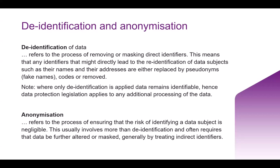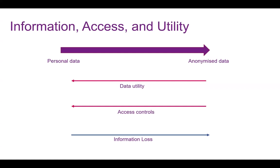Anonymization allows for the legal and ethical sharing of data while still preserving confidentiality. Effective anonymization is defined as a state where neither personal data nor personal information is in the data and where the risk of identification is considered sufficiently remote. There is a relationship between anonymization, data utility, access control, and information loss. As data moves from personal data to anonymized data, data utility goes down and information loss goes up, but more people can access it.